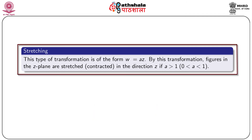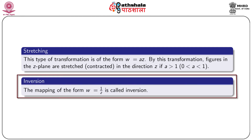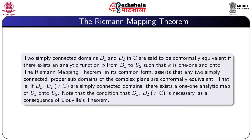If the rotation is clockwise, stretching is of the form w = az. By this transformation, figures in the z-plane are either stretched or contracted in the direction z if a > 1 or 0 < a < 1 respectively. Another transformation is inversion: the mapping of the form w = 1/z is called inversion.